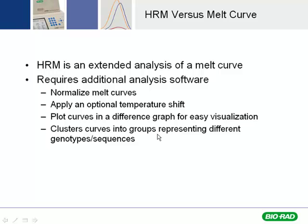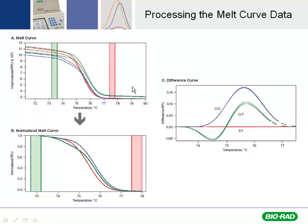The software clusters the curves into groups representing different genotypes. Here is a blow-up of a melt curve, looking at just this region between the two green and pink bars. The software sets each of the red, green, and blue curves to one — normalizing the plateau at the top to one and setting the bottom to zero — going from unprocessed fluorescence units to normalized units. This allows us to easily see the differences between the blue, red, and green curves, which are unique variants.